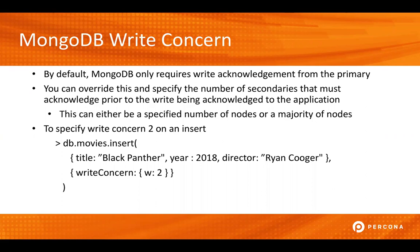By default, MongoDB only requires an acknowledgement from the primary. So if you have a three node replica set, this means that MongoDB will write to the primary, the acknowledgement will be sent back to the application, and then at some later point in time, that data will be replicated out to the additional nodes in the replica set.